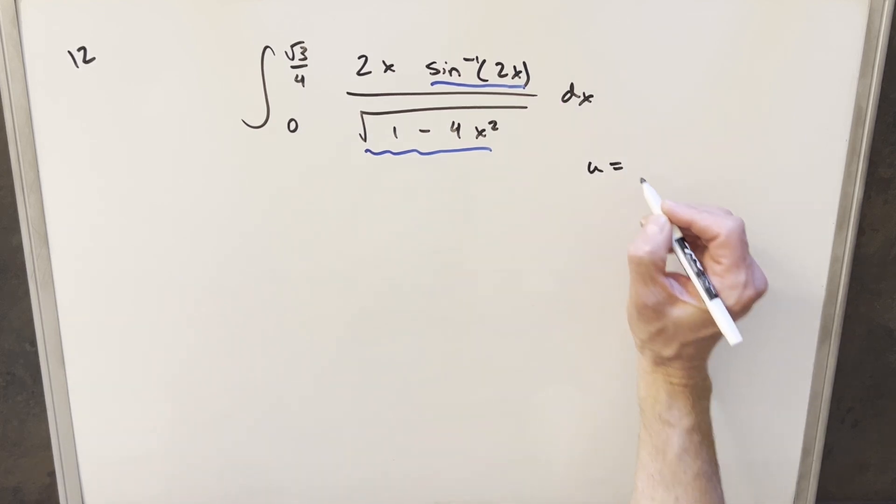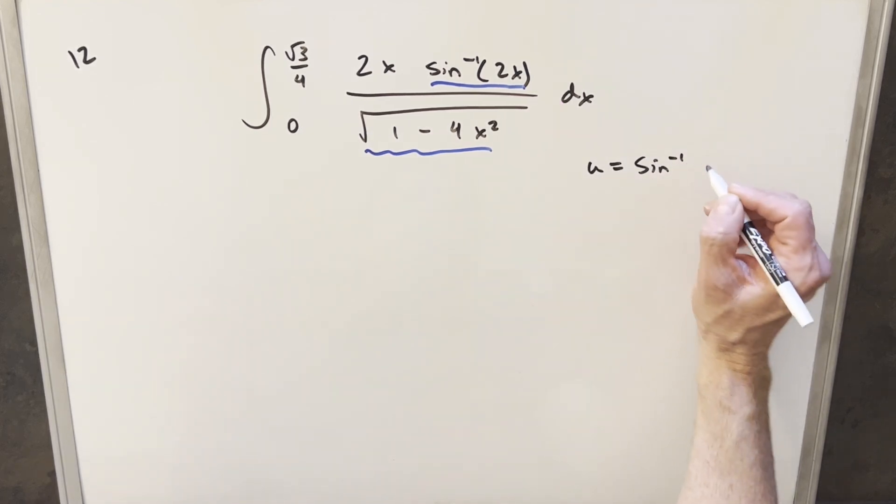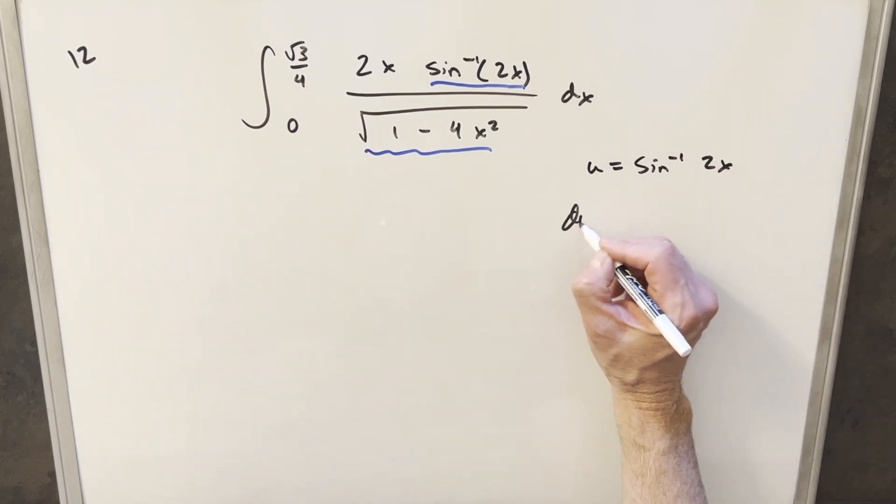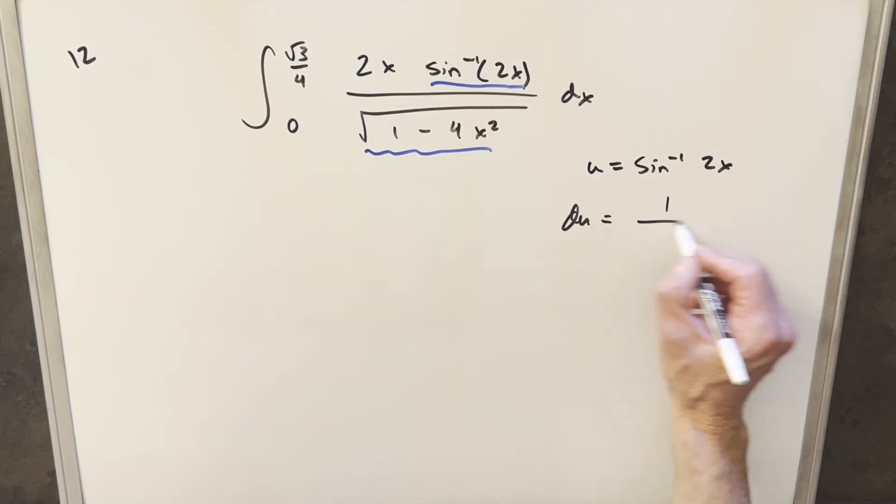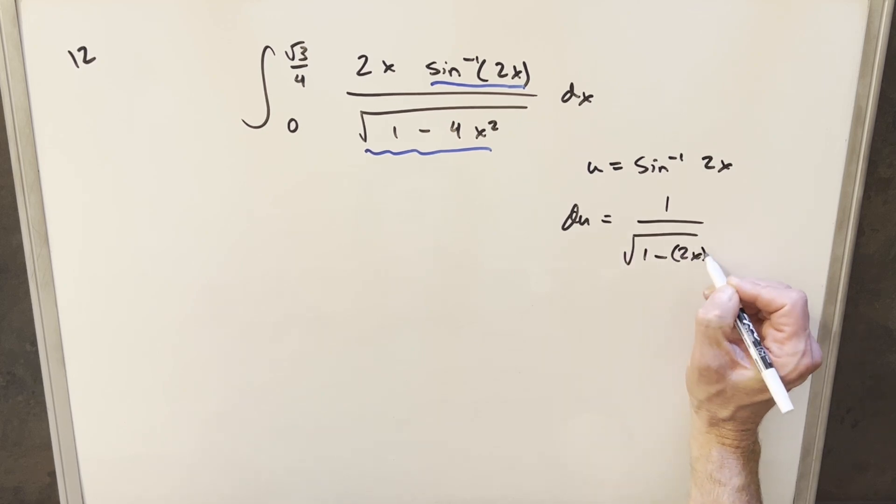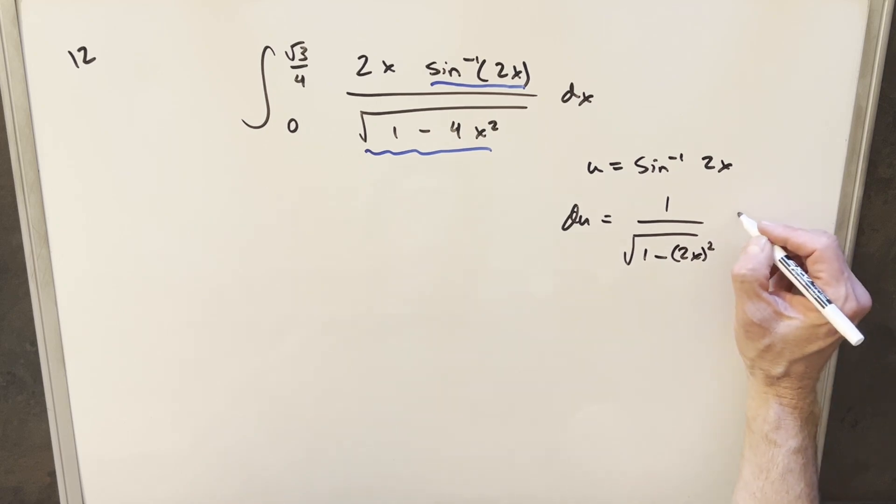If I just make u equal to arc sine of 2x and then take the derivative of this, the du value is going to be 1 over square root of 1 minus 2x squared, but that's the 4x squared dx.